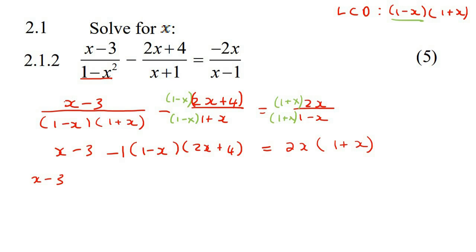So it's going to look like this: -1, now we're going to multiply these two out. So that would be 2x+4 take away 2x² take away 4x. And then that becomes equal to -2x + 2x². I just multiplied these together.